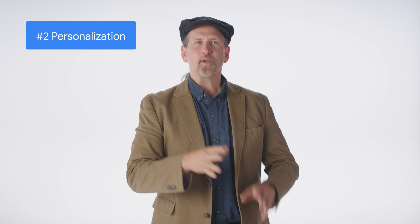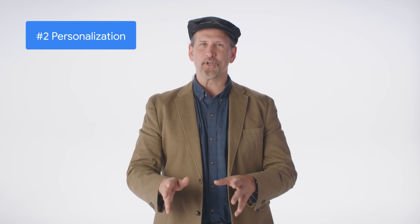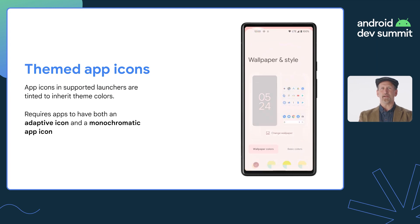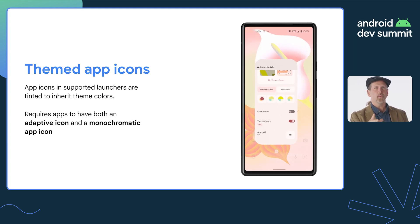Number two: personalization. Learn how your app can help make Android an even more personalized experience. From dynamic icon theming to widgets, per-app languages, and the latest in accessibility, personalization is all about making sure that your app supports the way your users use their devices. Themed app icons, for example, allow your app icon to harmonize with user-selected theme colors.